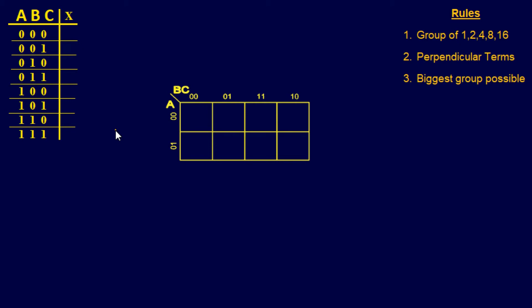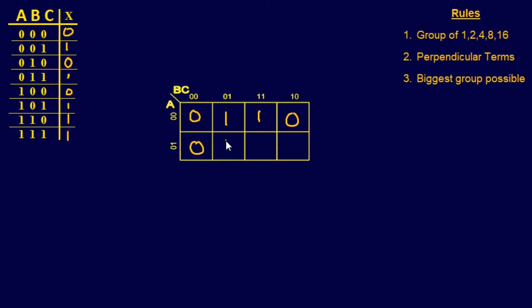This first example has three variables A, B, C, and we're going to use a truth table to fill in our K-map. The truth table output is already filled in: 0, 1, 0, 1, 1, 1. So binary 0 outputs 0, binary 1 outputs 1, binary 2 outputs 0, binary 3 outputs 1, binary 4 outputs 0, binary 5 outputs 1, and the remaining entries are 1.